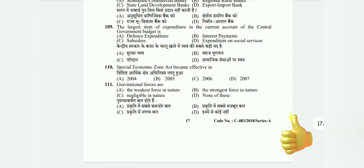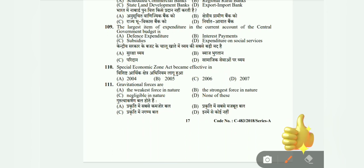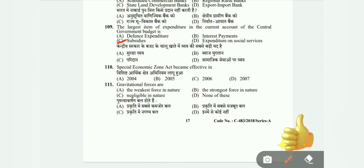Question 109: The largest item of expenditure in the current account of the central government budget is defense expenditure, interest repayment, subsidies, or expenditure on social services? The correct answer is subsidies. Question 110: The Special Economic Zone Act became effective in 2004, 2005, 2006, or 2007? The correct answer is C, 2006.